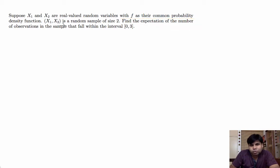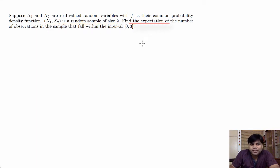x1 and x2 is therefore a random sample of size 2. We'll have to find the expected number of observations in the sample that fall within the interval 0 to 3.